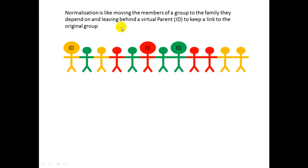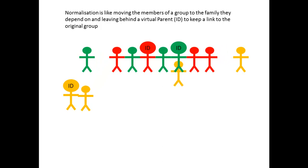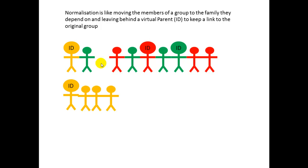Let's take a parent first of all — an ID — and separate them into their own family. We get the orange ID first, the orange parent, following the dependents of that parent — the orange kids, let's say. Then what happens is we leave behind a link to the old family. That's how normalization works.